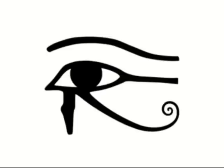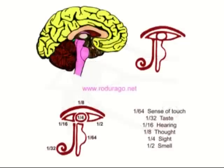Beside its mythological meaning, the eye of Horus had also a tangible analogy in ancient Egyptian medicine. There were six forms of perception corresponding to the Horus eye: smell, corresponding to the right part of the eye; sight, to the pupil; thought, to the eyebrow; hearing, to the left part of the eye; taste, corresponding to the spiral; and sensation, corresponding to the upright part.